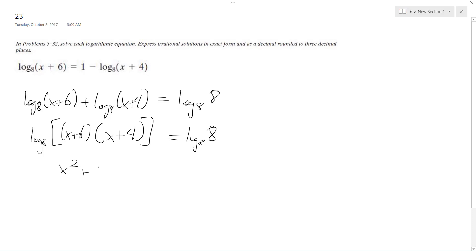So I get x squared plus 4x plus 6x, which is 10x, plus 24 equals 8. Subtract 8 from both sides, so I get x squared plus 10x plus 16 equals 0.